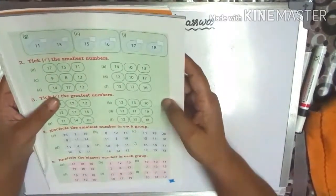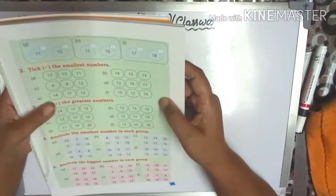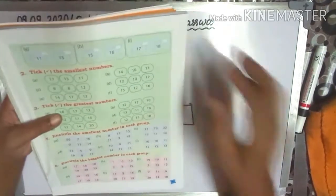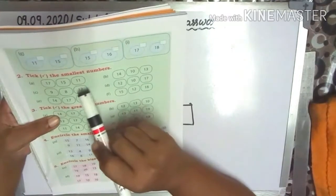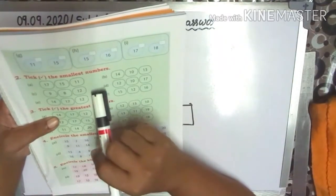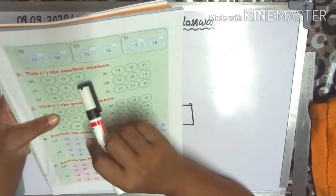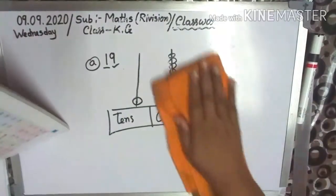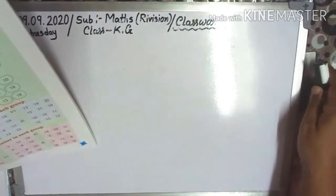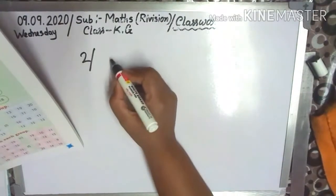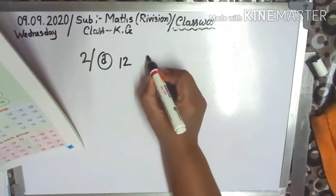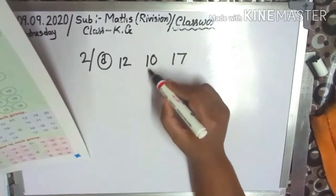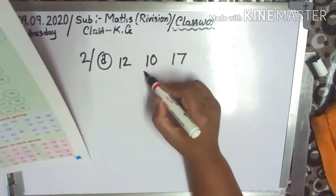G, H, I — practice. Next: tick the smallest number only. A: 17, 15, 11. So tick only the smallest number — 11 is the smallest, so you tick 11. C: 9, 8, 12. D: 12, 10, 17 — tick the smallest number. The smallest number is 10, so you tick 10.